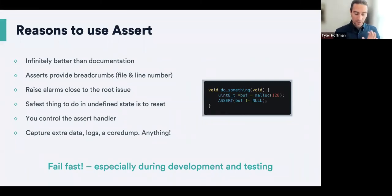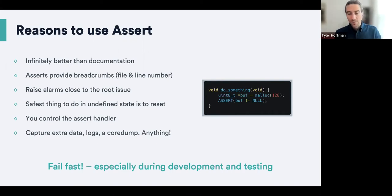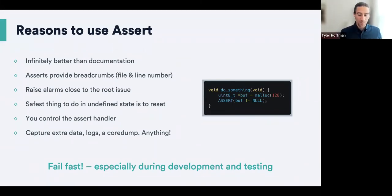If an assert fails, you're likely running in an undefined state — your device is not performing correctly. It could be memory corruption. If there was an invalid argument, it could be memory corruption, or it could be somebody misusing an API — or a bad actor. If the assert fails, this assert needs to be true, and there's no point in letting a system run in an undefined state and then failing catastrophically, because that could cause the system to write bad data or perform wrong actions for your customers. You control the assert handler — you can capture extra logs, data, a core dump — because when an assert triggers, the system is still in your control.